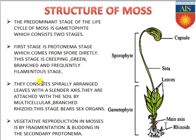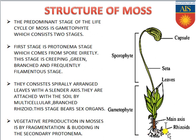The protonema stage comes directly from the spore. This stage is creeping, branched, and frequently filamentous, with spirally arranged leaves and a slender axis. The plant is attached to the soil by multicellular branched rhizoids. This stage bears the sex organs — antheridium and archegonium — confined within the leaves.